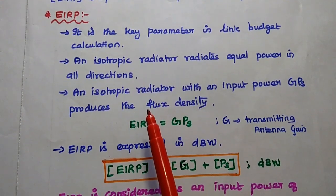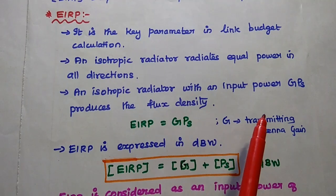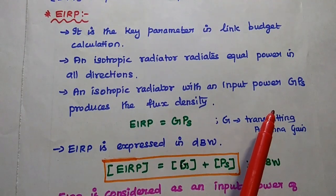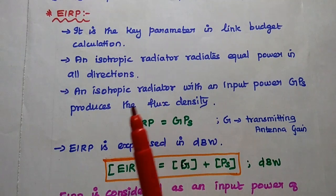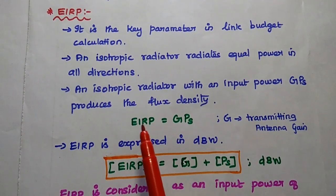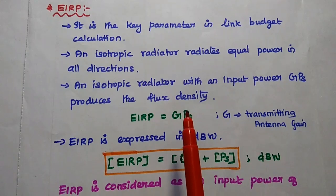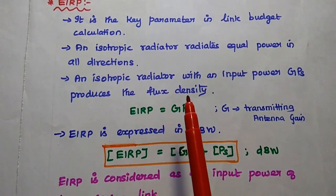This isotropic radiator with an input power GPS, here G is the transmitting antenna gain, PS is the source power, so an isotropic radiator with an input power produces the equal flux density around it, the same flux density.